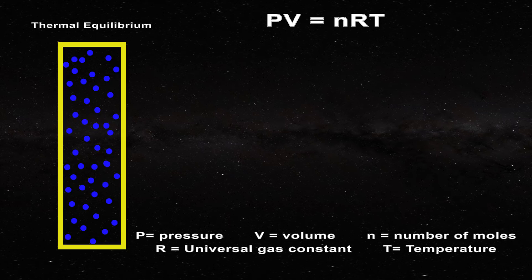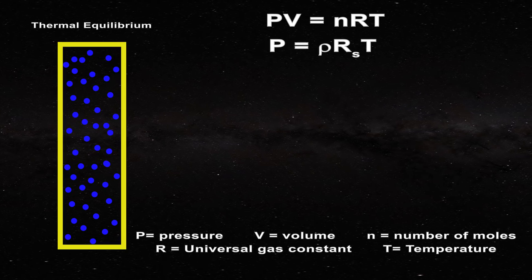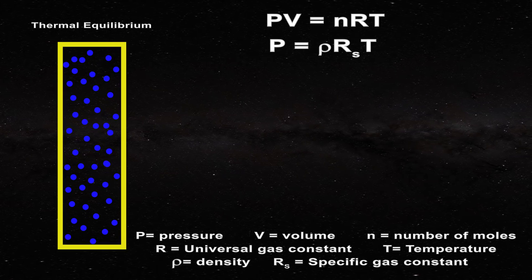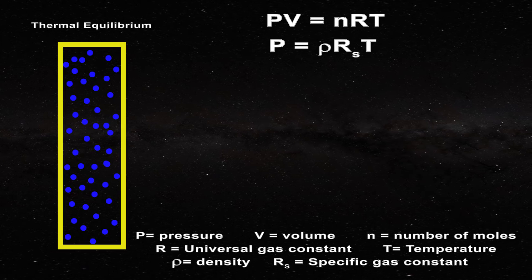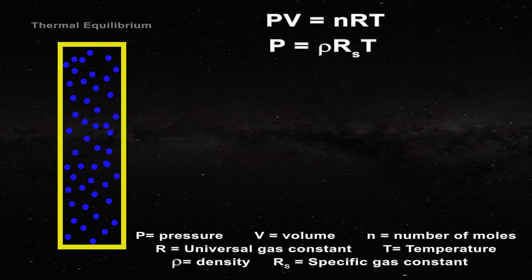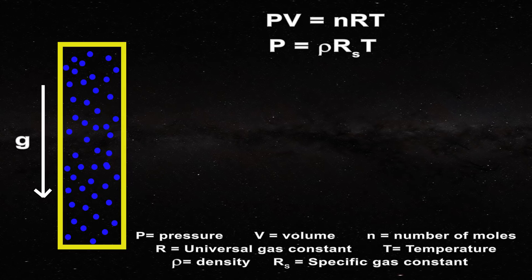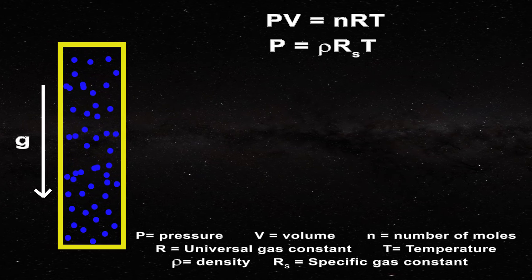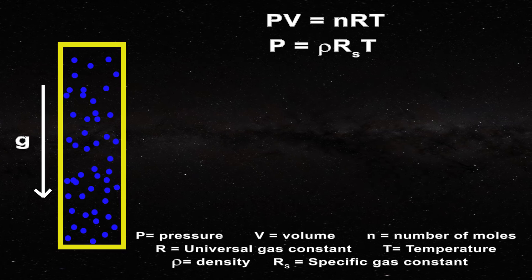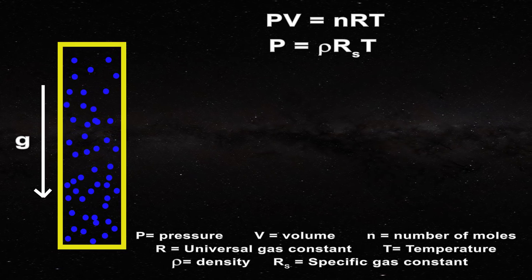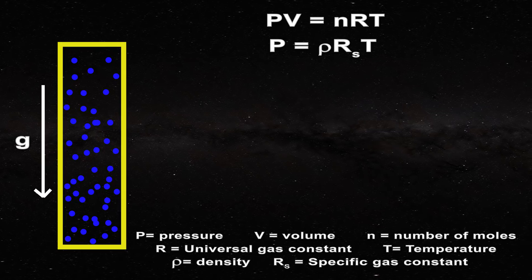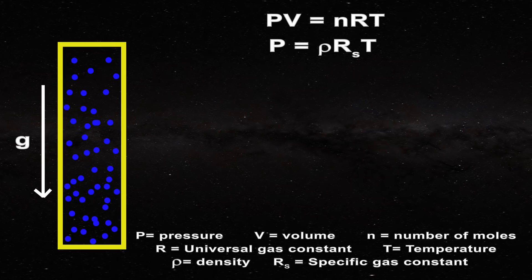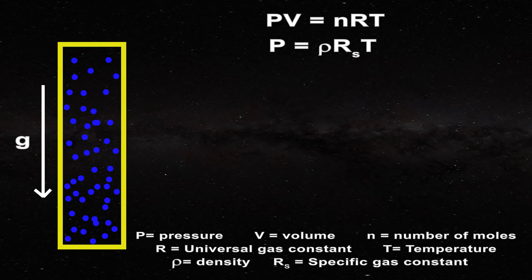We can express the ideal gas law also in this form where rho represents density and R sub s the specific gas constant. Now when an external gravitational field is applied, the atoms will begin to migrate towards the bottom of the column. The pressure will correspondingly become non-uniform. In fact, both the density and the pressure of the gas will assume the same functional dependence with increasing height z.